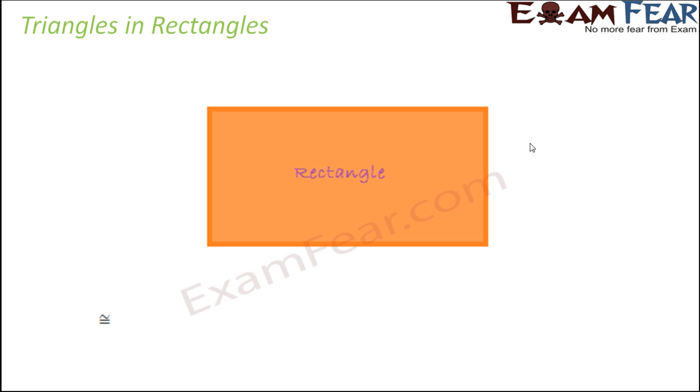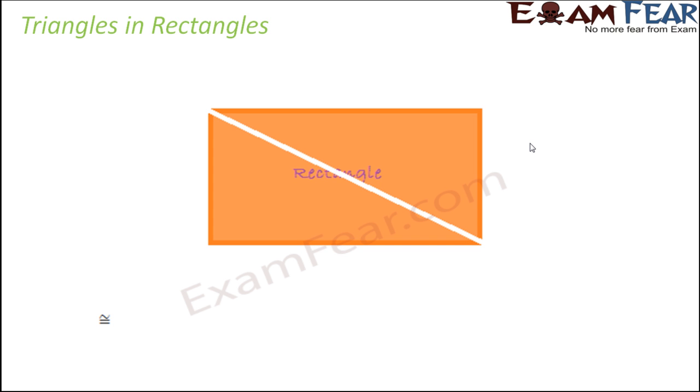Let us look at an interesting thing. Have you ever observed that inside a rectangle you can have triangles? Just draw a diagonal like this and what do you see? The rectangle has now been split into two triangles. So this is one triangle and this is the second triangle.